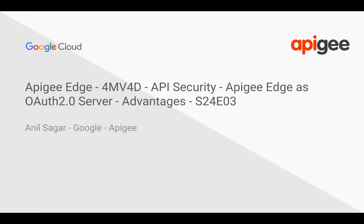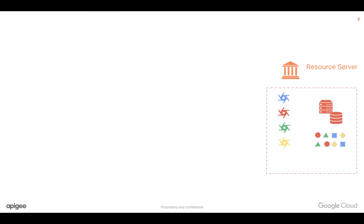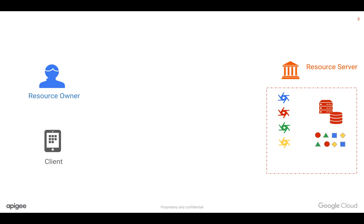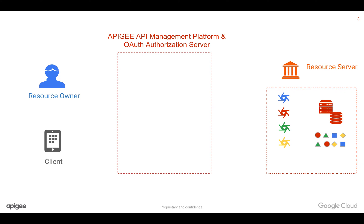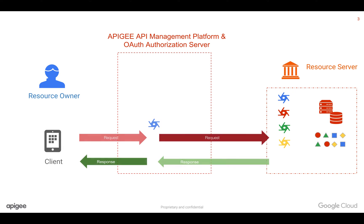In this video, we're going to discuss the advantages of using Apigee Edge's API management platform as an OAuth 2.0 server. Let's say you have different APIs running in your backend systems, which either have some legacy API security or no security within the firewalls. Various consumption channels would like to access these APIs. If you would like to expose the APIs to the outside world, you need security like OAuth 2.0. Apigee API management platform can sit in between the consumption channel and the backends, where you expose APIs through Apigee Edge.